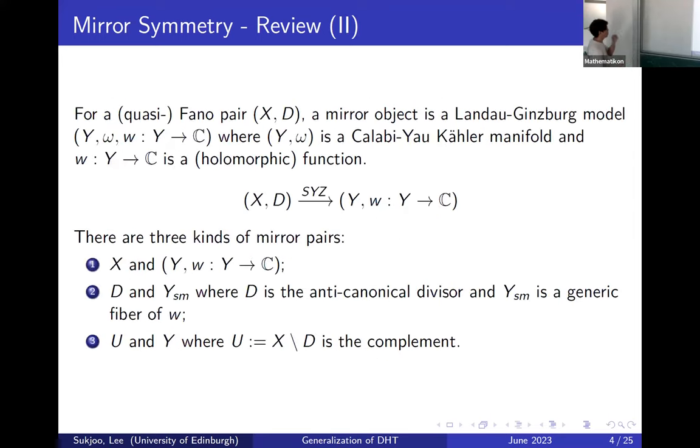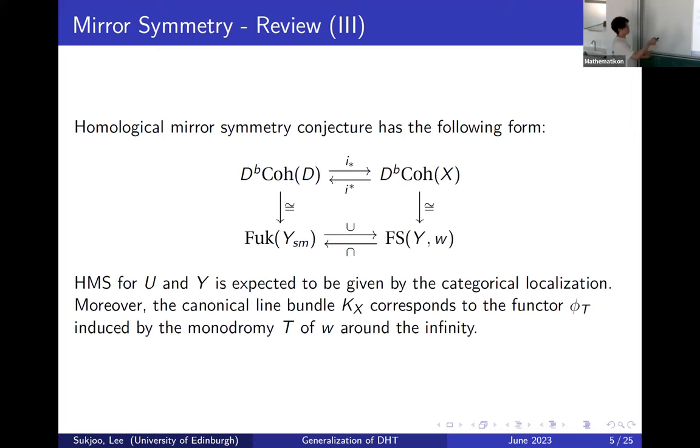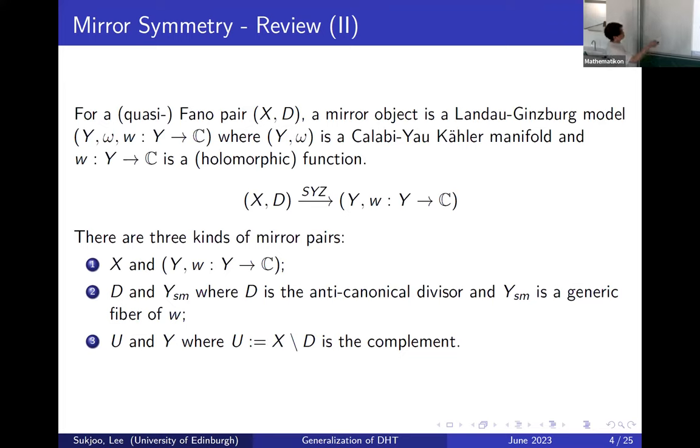This idea allows us to explore mirror symmetry beyond the Calabi-Yau case, which is particularly our main interest. When we have the Fano pair, where X is Fano and we use the anti-canonical divisor D, the SYZ construction tells us that the mirror object is not just a single Calabi-Yau manifold but also you get a certain form of function, which is called the Landau-Ginzburg model. The idea is that we basically account for certain holomorphic discs with potential.